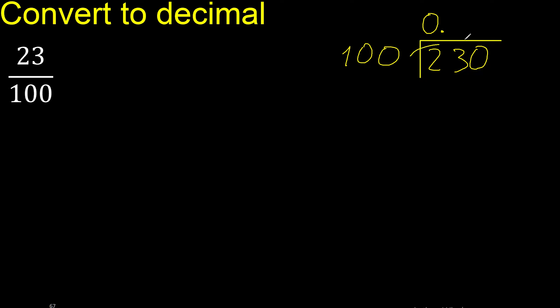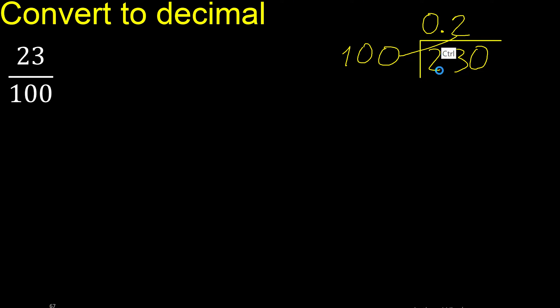Therefore, 100 multiplied by which number is nearest to 230 but not greater? Multiplied by 3 is 300, which is greater. Therefore multiplied by 2 is 200. Subtract — the result is 30.